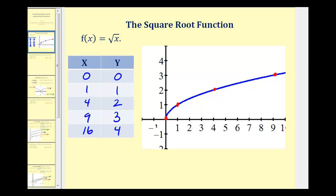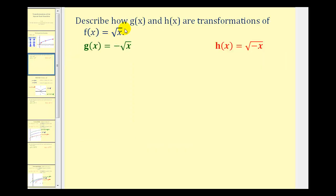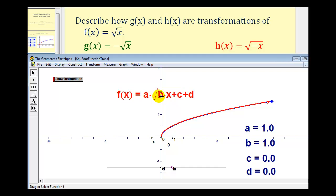Let's first describe how g of x equals negative square root of x, and h of x equals the square root of negative x, transform the basic function f of x equals the square root of x. To do this, we'll look at an animation. Notice if a is equal to one, b is equal to one, c is equal to zero, and d is equal to zero, we'd have the basic square root function, which we see here.